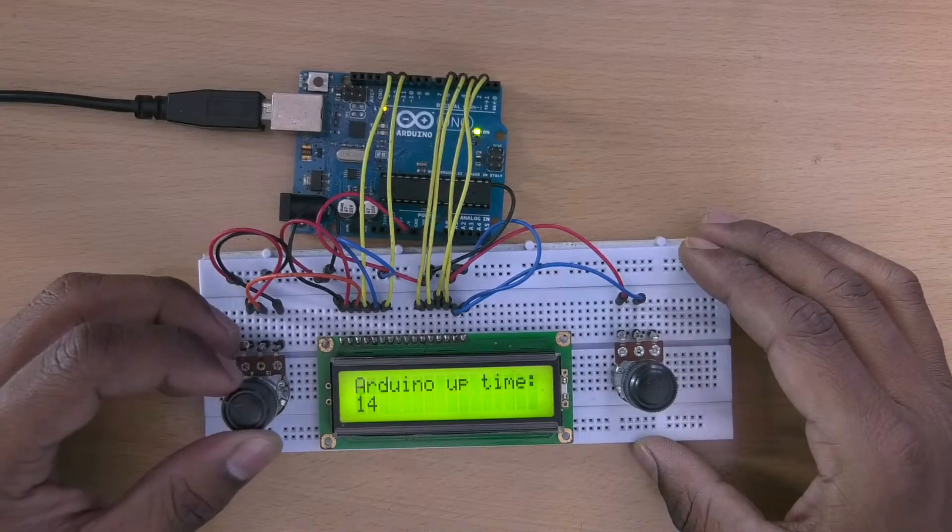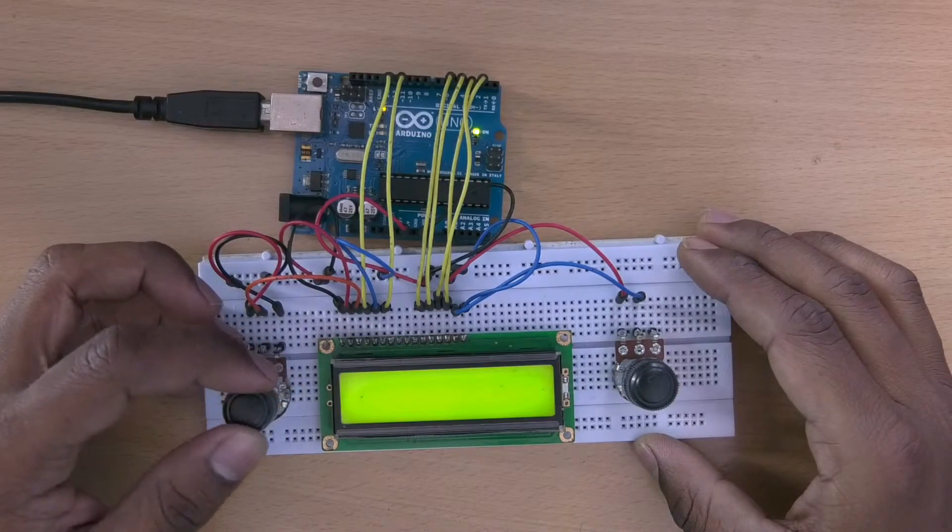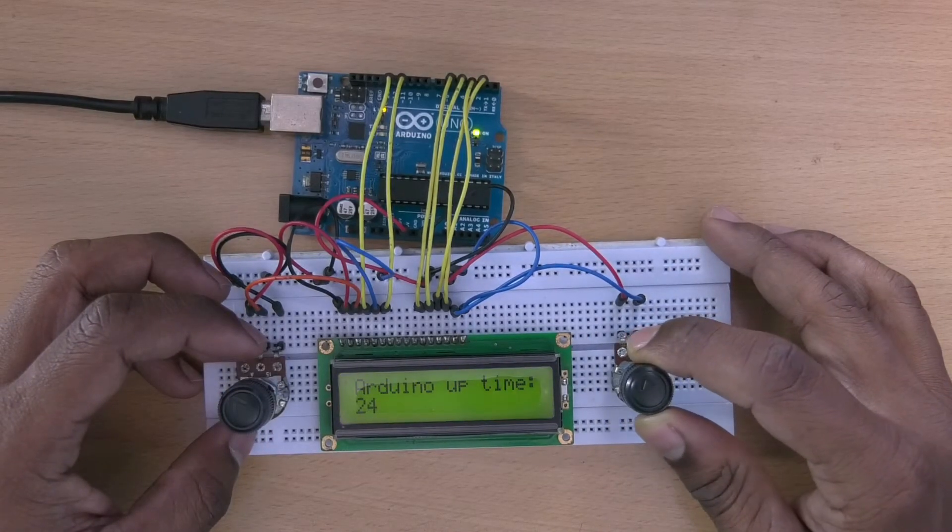Now we can adjust the contrast and backlight brightness of the LCD using potentiometers. In this way we can use this type of liquid crystal display.